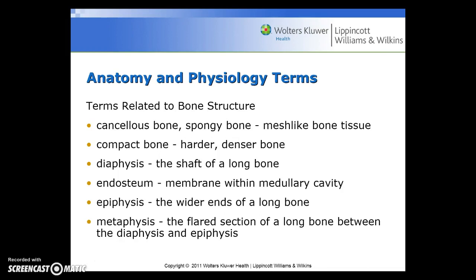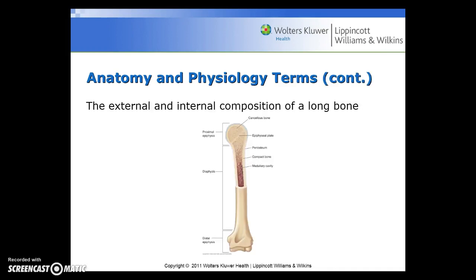Additional terms related to bone structure are the cancellous bone or spongy bone, which is a mesh-like bone tissue. The compact bone, which is a harder, denser bone. The diaphysis is the shaft of a long bone, the endosteum is the membrane within the medullary cavity. The epiphysis is the wider ends of the long bone, and the metaphysis is the flared section of a long bone between the diaphysis and the epiphysis. Here is a diagram showing the external and internal composition of a long bone.